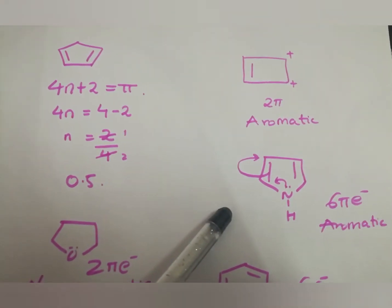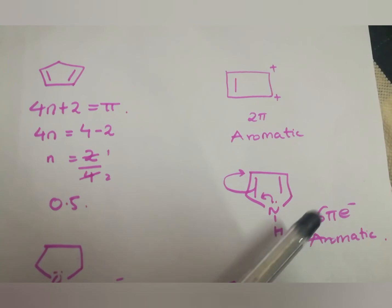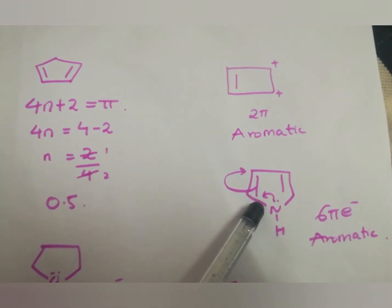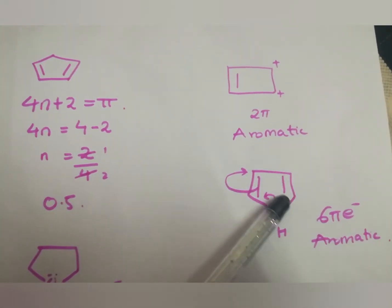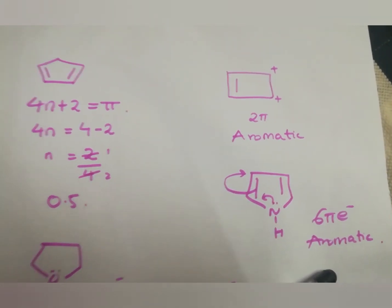Whereas, in this case, in this structure, it contains 6 electrons. 2 from lone pair, 2 from this, 4, 6. Therefore, it is an aromatic compound.